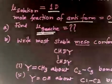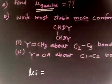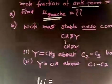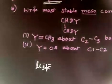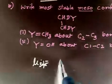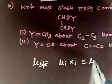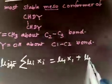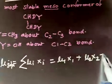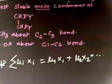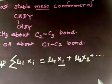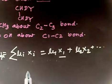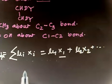Mu of solution is given as the sum mu_i times x_i, that is mu_1 x_1 plus mu_2 x_2 plus mu_3 x_3, where x is the mole fraction of the most stable conformer. In any case you can have 3 stable conformers.